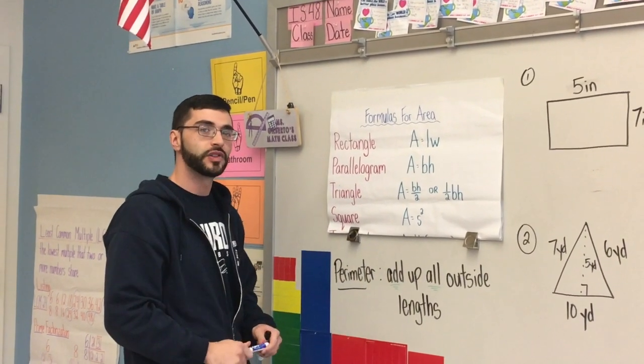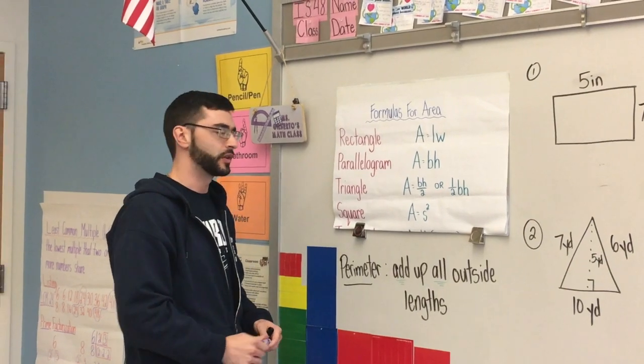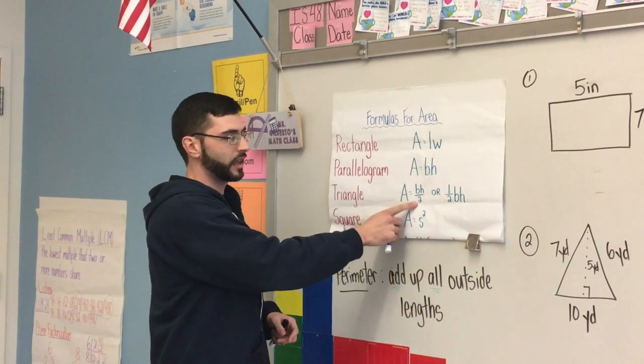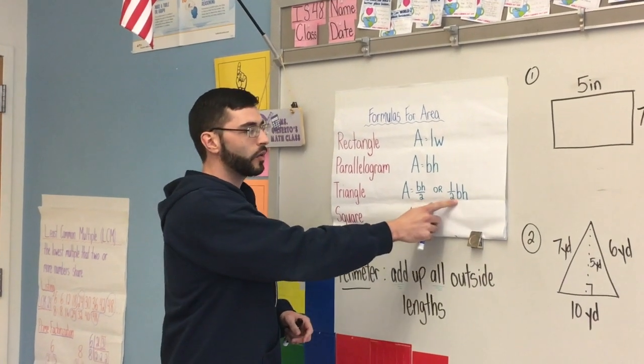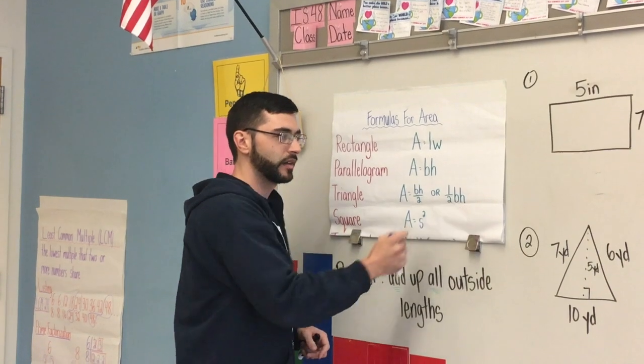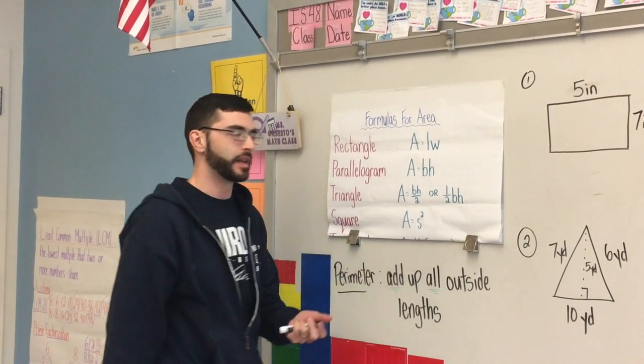For triangle, you have two different formulas, so you get to pick which one you want to use. They give you the same answer. So it's either area equals base times height divided by two, or you can divide the base in half and then multiply that answer by its height. So in other words, half the base times height.